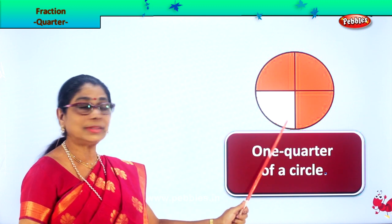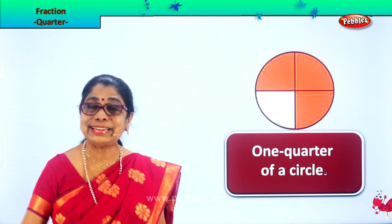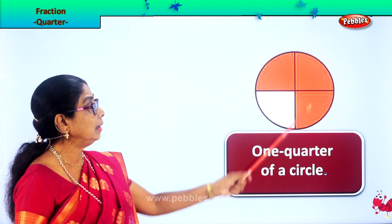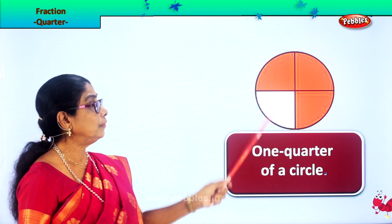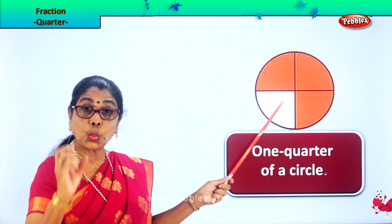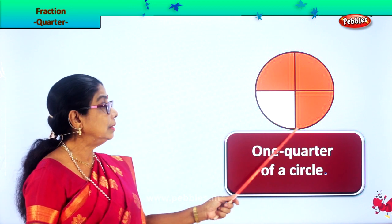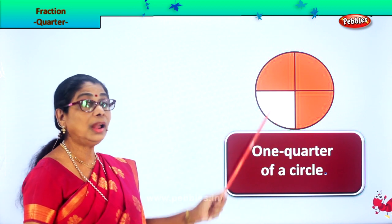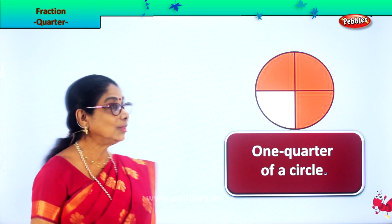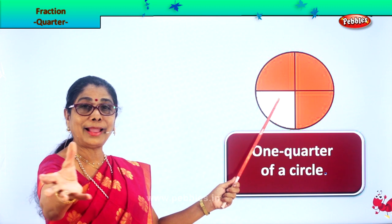We have two halves. Then again we cut it across. Now we have cut the circle into four equal bits — one, two, three, four. We have four equal parts. Now this part — one part — is called one quarter of a circle. So one quarter of a circle, one quarter of a cake. Here, I give it to you.